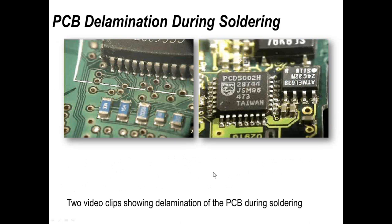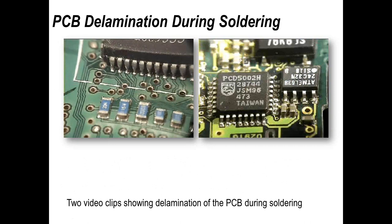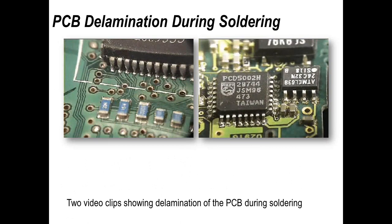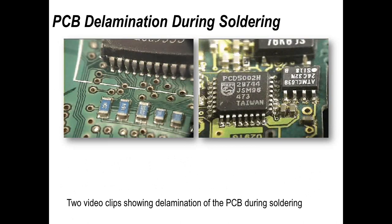These two video clips show actual delamination occurring during surface mount rework and repair. The example on the right-hand side shows a QFP and an SOIC lifting as the laminate pops, and on the left-hand side you can see a row of resistors of two different sizes literally lifting as the moisture expands and causes separation on an inner layer.